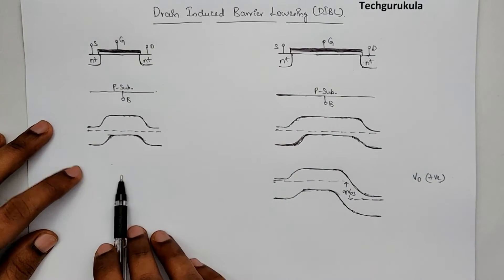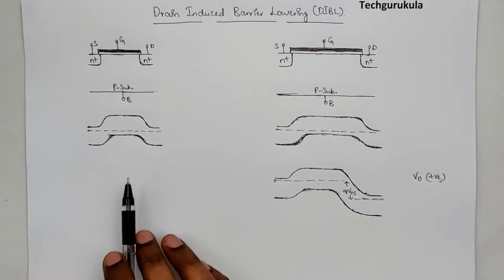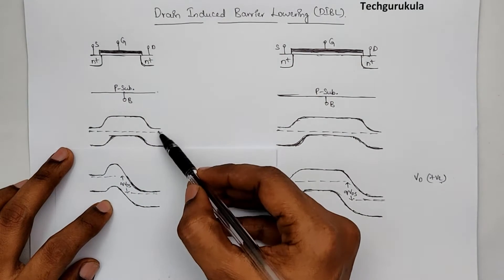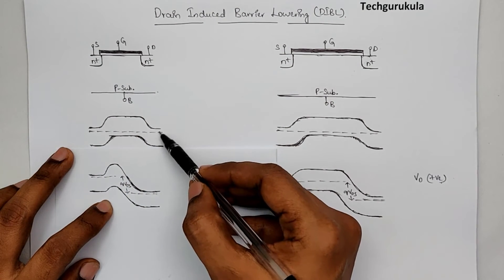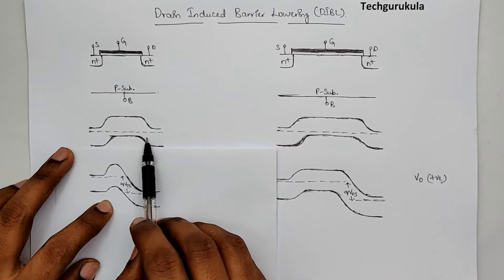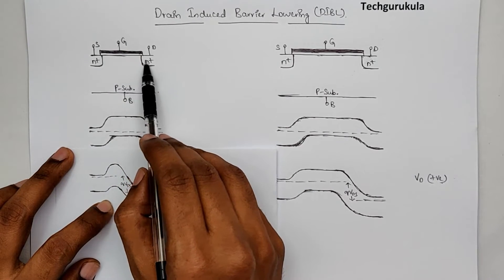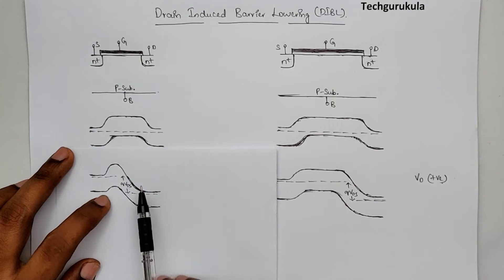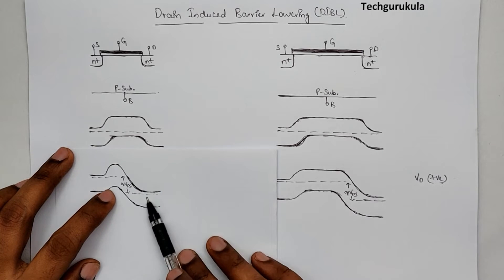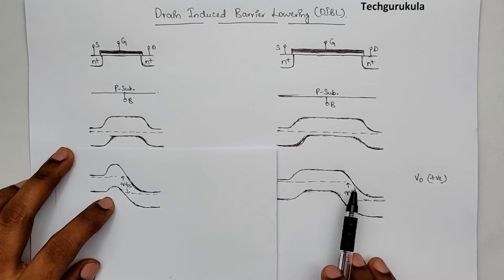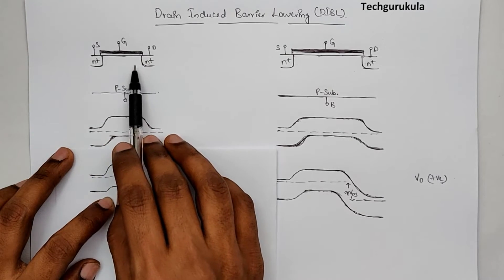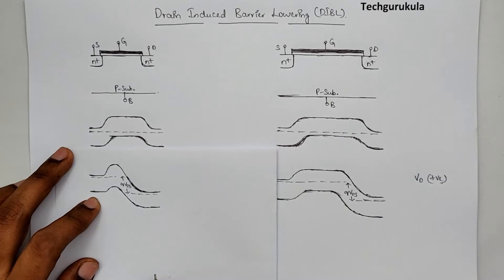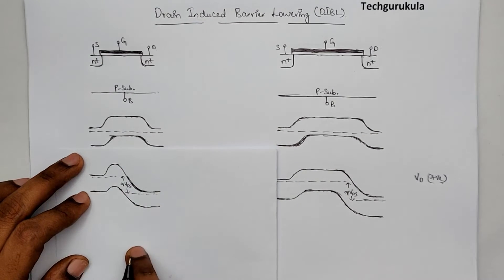Now let's do the same thing on the short channel MOSFET side. In this case, when drain potential is increased, the energy band near the drain would come down. When it comes down, the depletion region in the substrate near the drain would increase, and we would get this slope. If you see, the effect of this bending is relatively more compared to the long channel case because the available channel length itself is small. Now, if we increase the drain potential even higher, let me draw what happens to the energy band diagram.